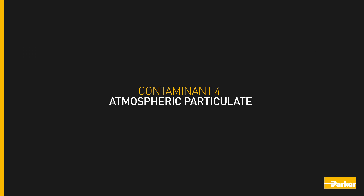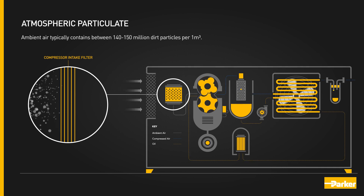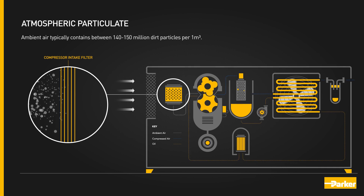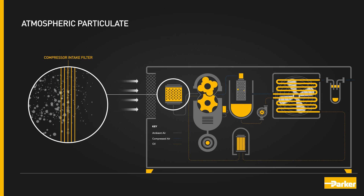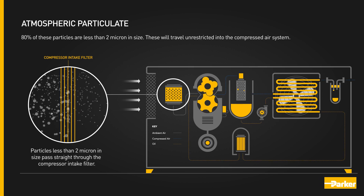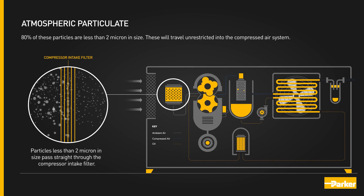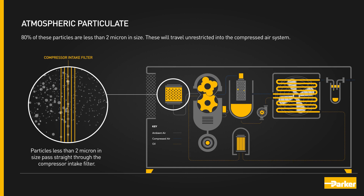Contaminant four: atmospheric particulate. Ambient air typically contains between 140 to 150 million dirt particles per cubic metre. 80% of these particles are less than 2 micron in size, and these will travel unrestricted into the compressed air system.